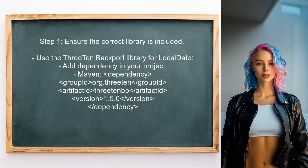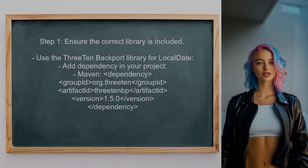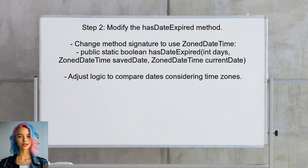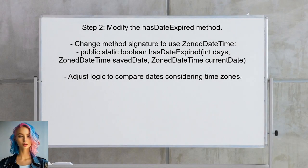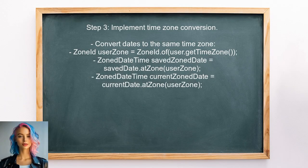To begin, ensure that you are using the correct version of the LocalDate class from the 310 backport library, which provides LocalDate functionality for Java versions prior to Java 8. Next, modify the HasDateExpired method to account for time zones by using the ZonedDateTime class instead of LocalDate. Then implement the logic to convert the saved date and current date to the same time zone before performing the expiration check, ensuring the comparison is accurate regardless of the user's location.